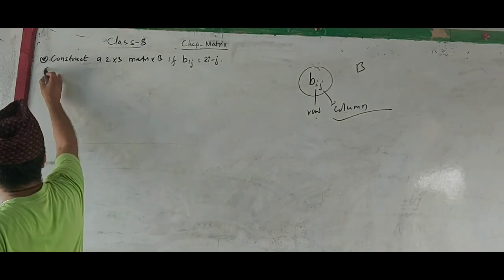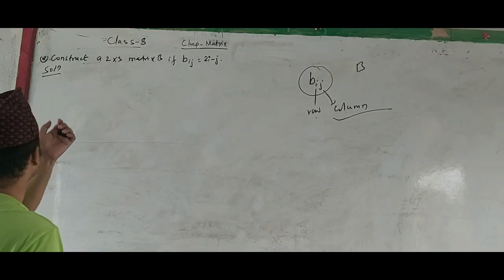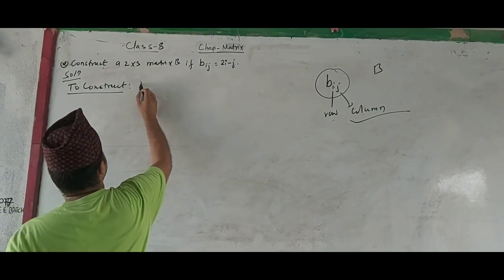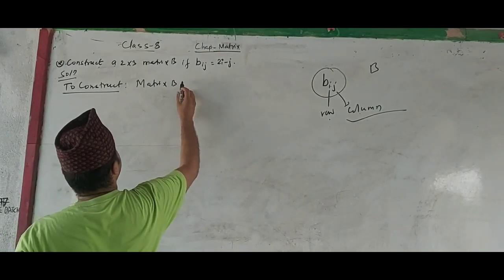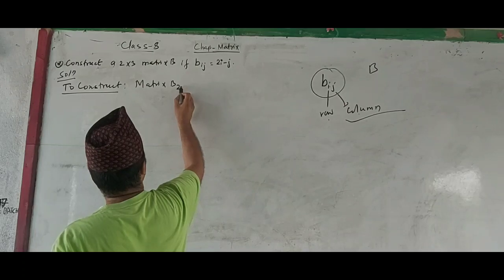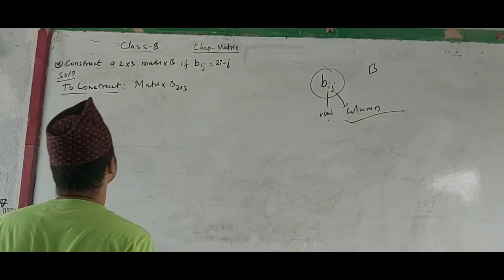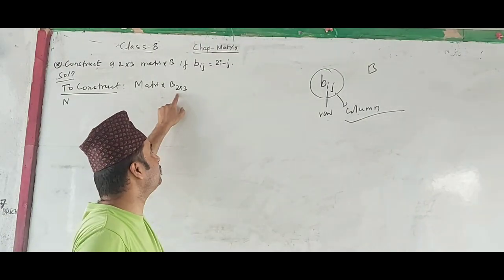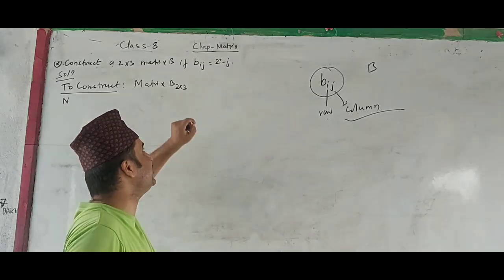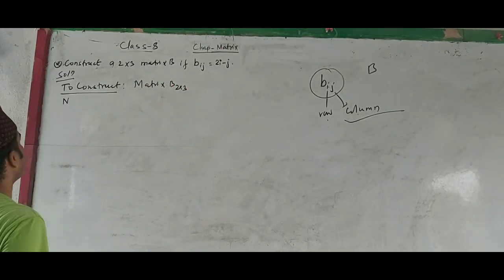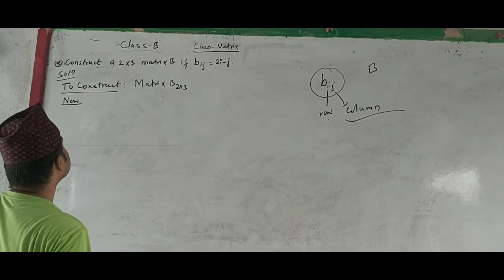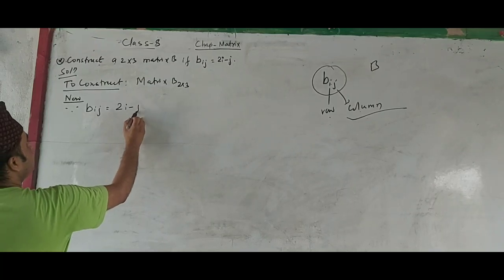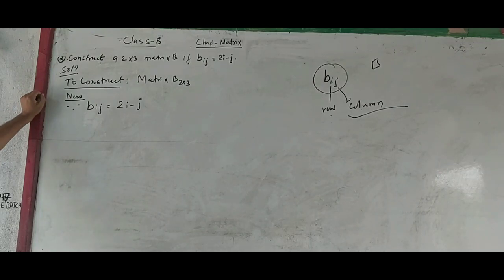Now we are going to construct the matrix — let me show you how to construct it. The requirement is to construct a matrix of 2 by 3. Let us find each element. We need to calculate each element in matrix B. The condition provided to us is BIJ equals 2i minus j.